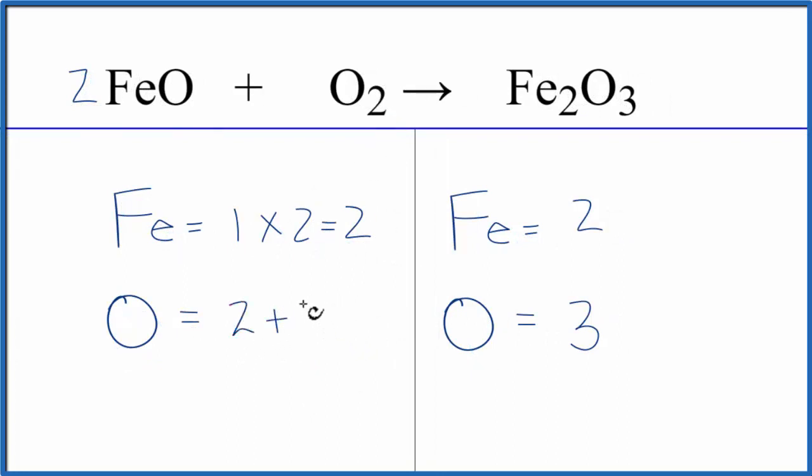It may make sense to try to get this to an even number, that might help us balance the oxygens. So we could put a coefficient of two in front of the Fe₂O₃. We have two times two that gives us four, then we have the three times the two here that gives us six.